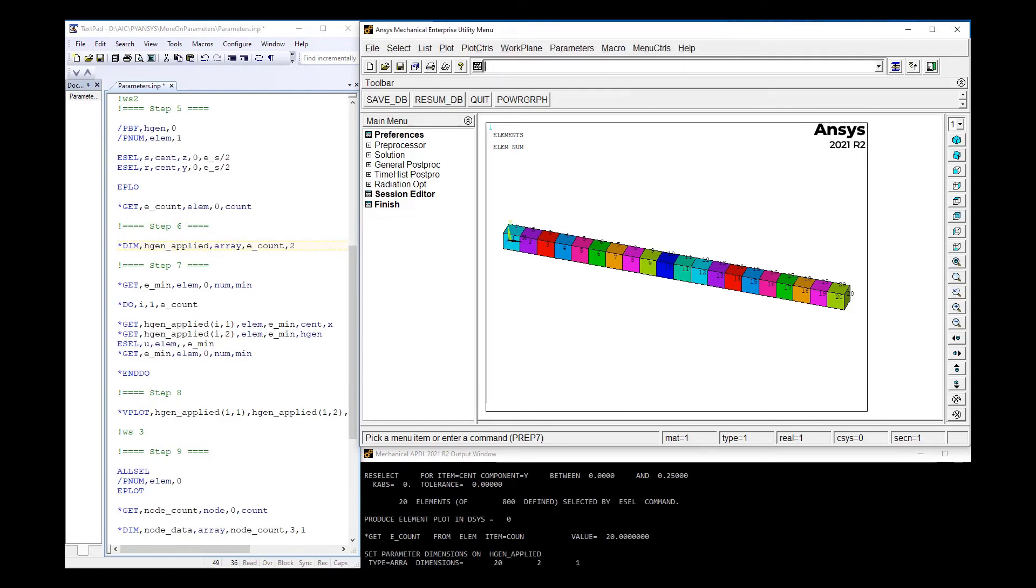As we can see, the element numbers happen to increase with no gaps as we move along X. We'll take advantage of that when gathering the data. However, for a more general case, a more sophisticated selection routine would need to be implemented. To start, the minimum element ID number of the current set of the selected elements is retrieved with *GET and stored into e_min. Looping over the count of elements, *GET is again used to get the element centroid X location and the heat generation value applied into the array. Within the loop, the minimum numbered element is unselected and the *GET command repeated to find the minimum numbered element of those that are left.